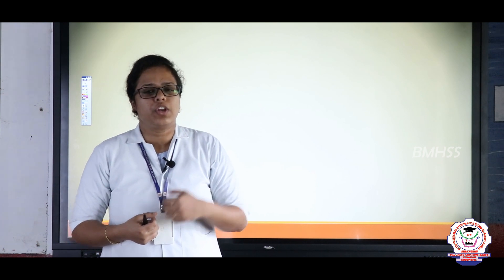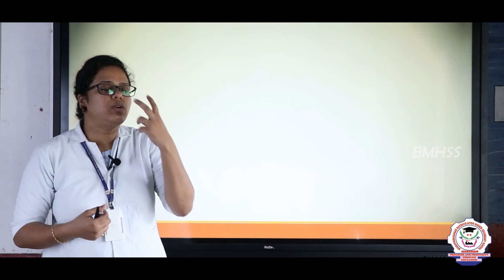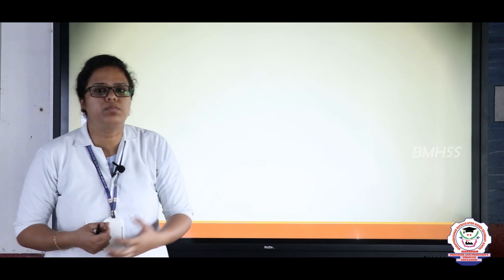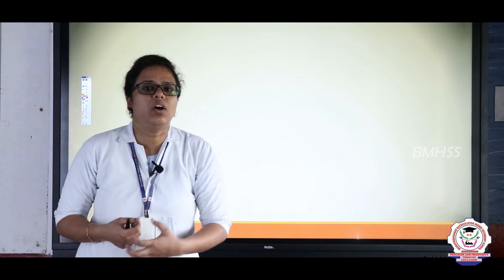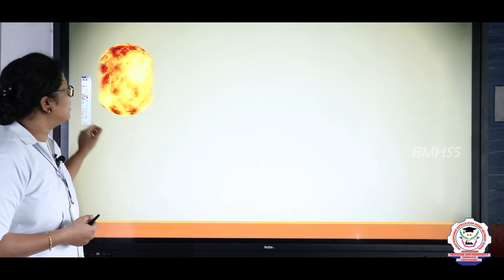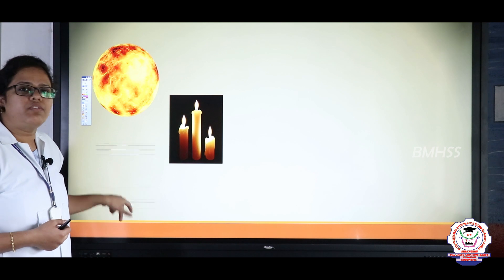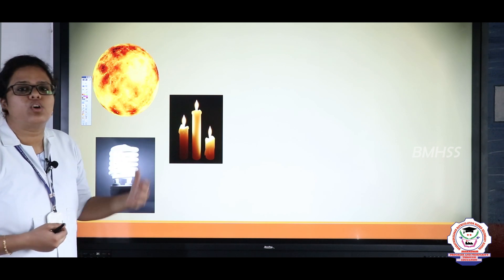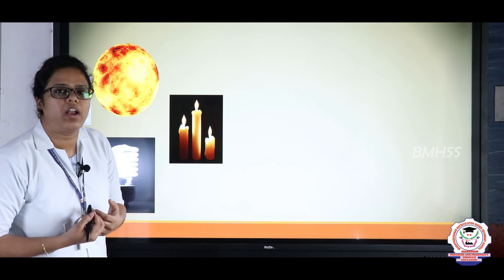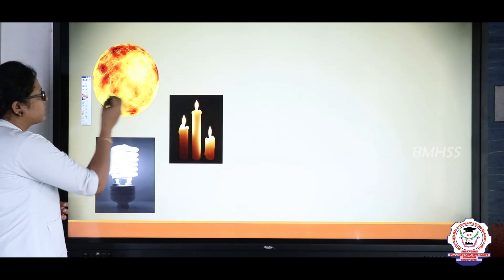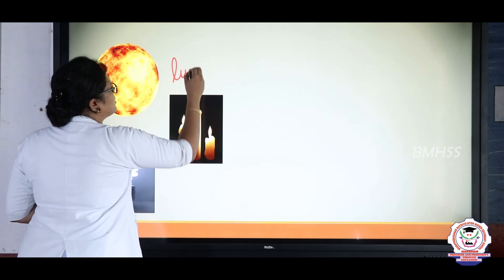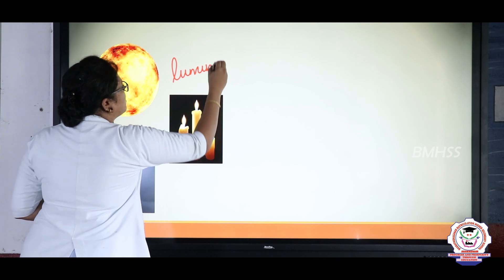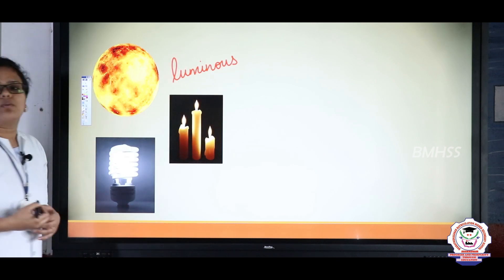We are able to see things because of the light coming from objects. During dark or night, as there is no light, we are not able to see things clearly. There are certain objects which can generate their own light — for example, the sun, the burning candle, or the fluorescent bulbs. These objects are called luminous objects — objects which generate their own light.